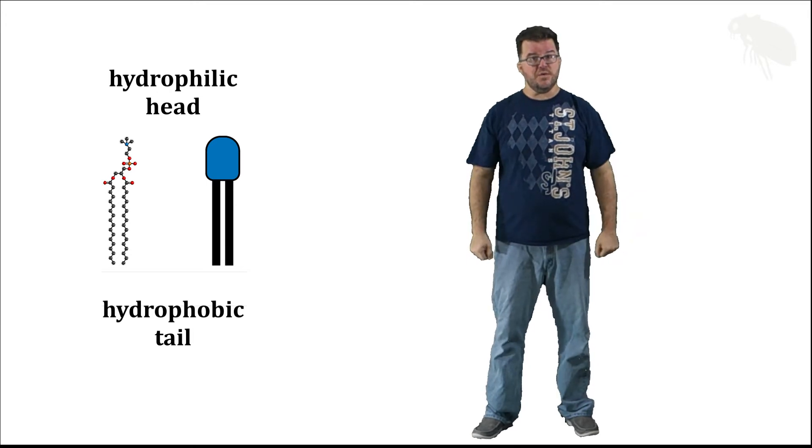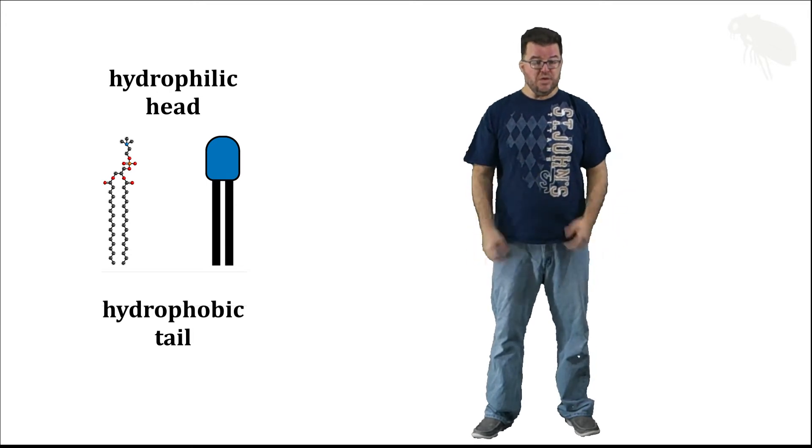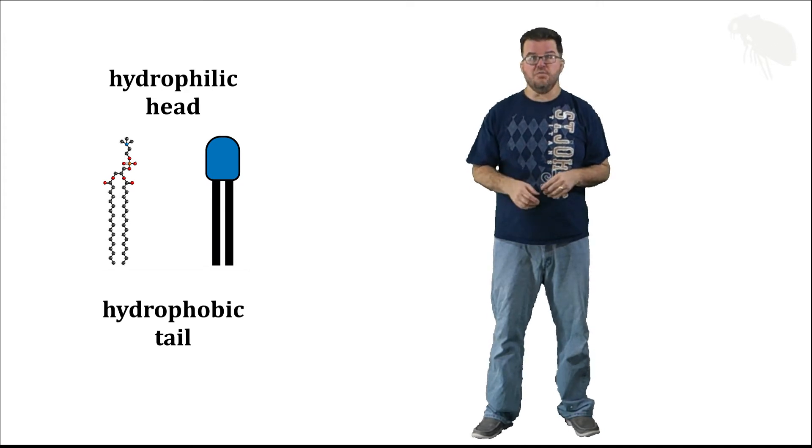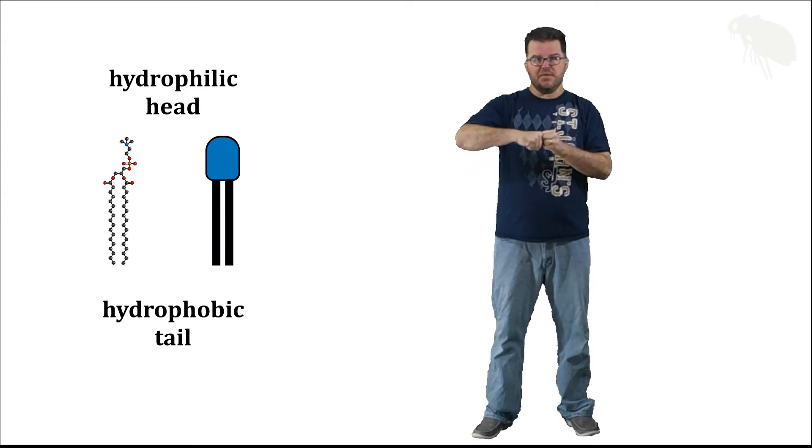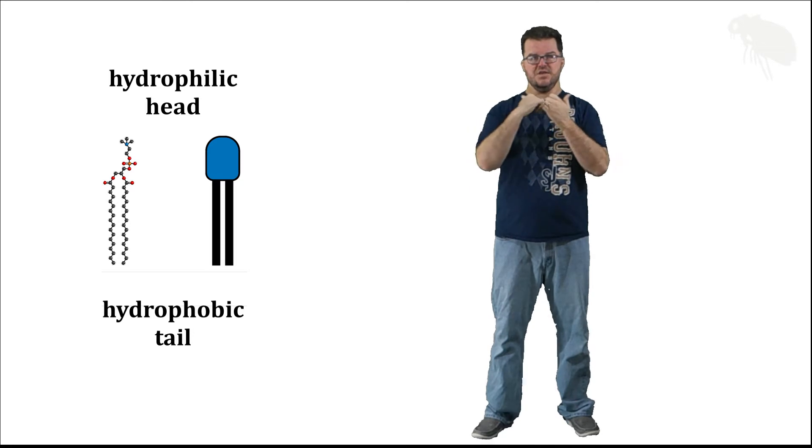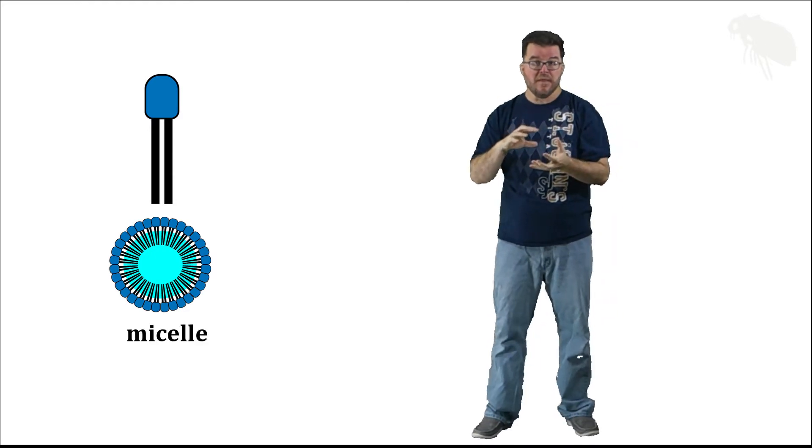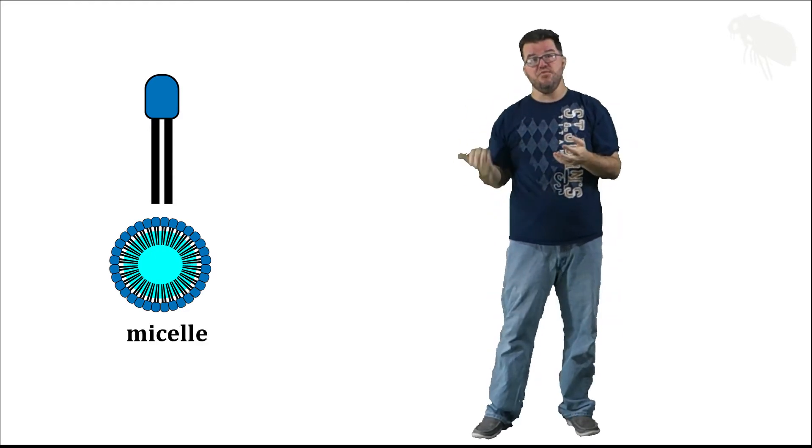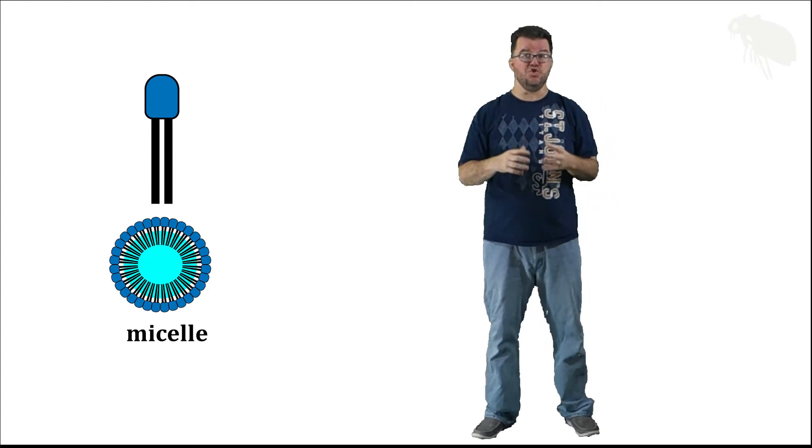You put this thing into an aqueous environment, what do the heads do? They hydrogen bond with water. What do the tails not do? Hydrogen bond with water. And so the tails end up getting pushed together, the heads pointing to the outside. While I'm showing it in two dimensions to my right, this is actually a three-dimensional sphere that forms called a micelle. This is a spontaneous result of putting this amphipathic molecule into an aqueous environment.